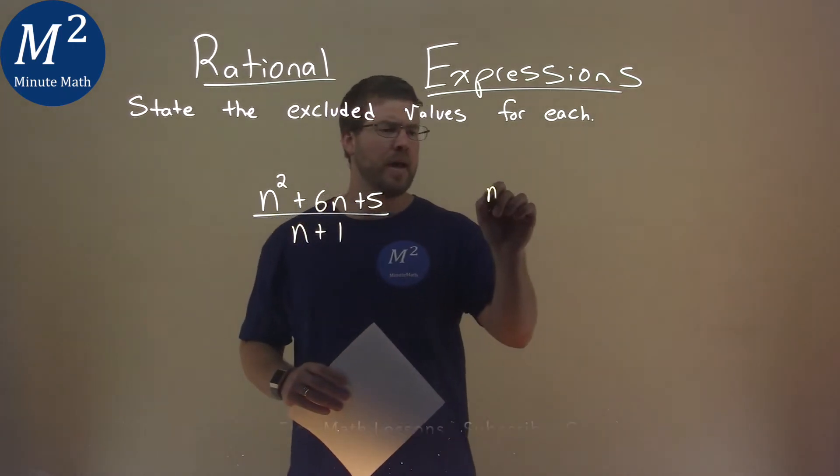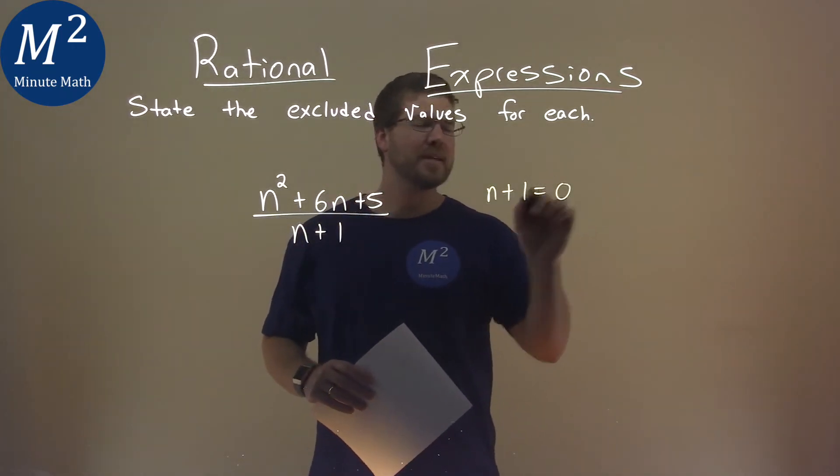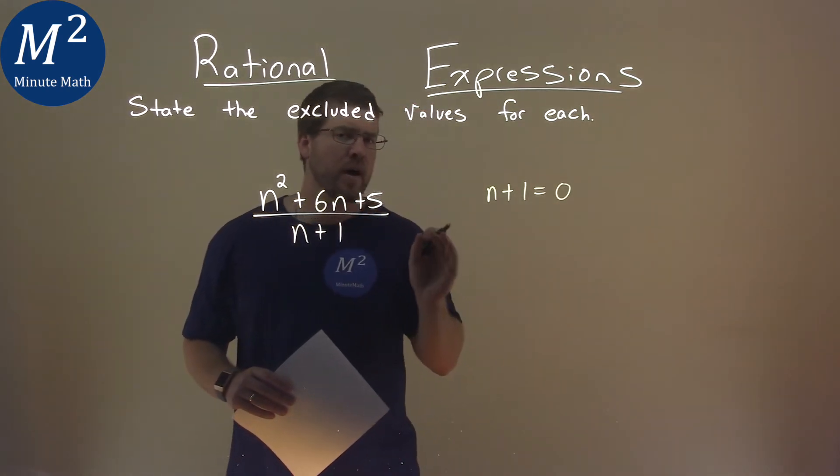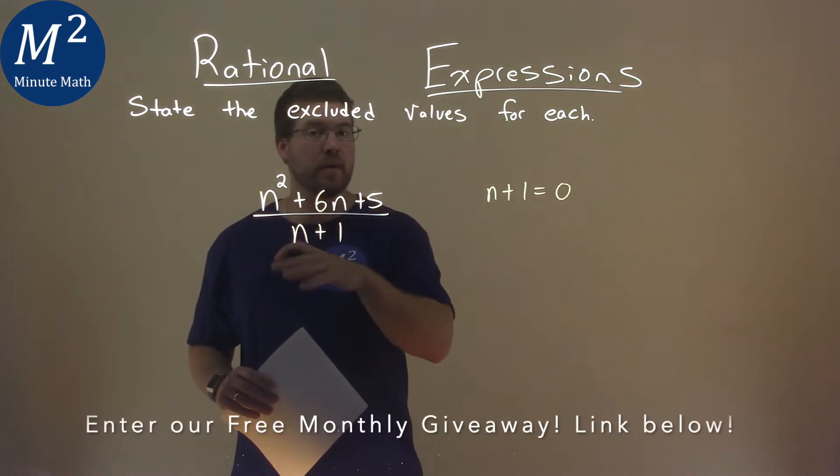I want to take my denominator, my n plus 1, and I'm going to set it to 0, because we want to find what value makes this denominator equal to 0.